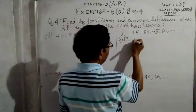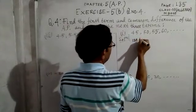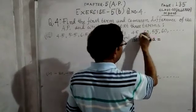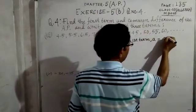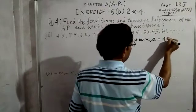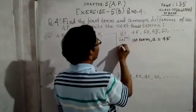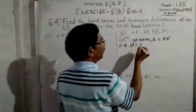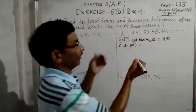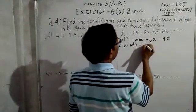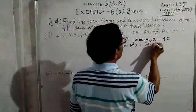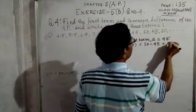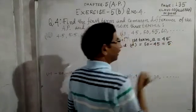The first term, shown by the letter A, is equal to 45. The common difference, shown by the letter D, is equal to the second term minus the first term — that is 50 minus 45, which equals 5.